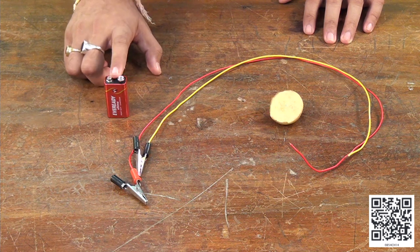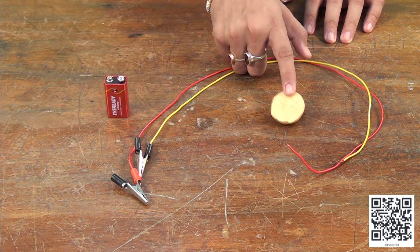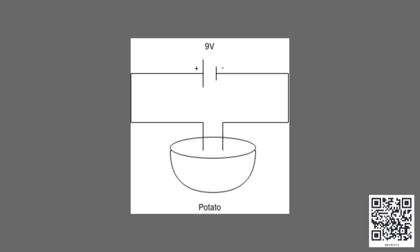For this activity we will be using a 9 volt battery, connecting wires, and a slice of potato. Connect these things as shown in the diagram. So we will be connecting the battery to the potato.